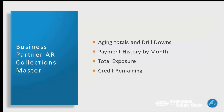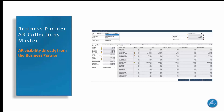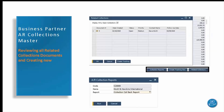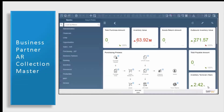Lastly, we're going to be taking a look at our business partner master record in relation to AR collections. Accessing the AR collections information directly from your business partner via our AR collections tab makes it quick and easy to see your aging details, the business partner's payment history, as well as allows you to access all of the customer's related collections documents. You can also create a new collections document here as well. Let's take a look.